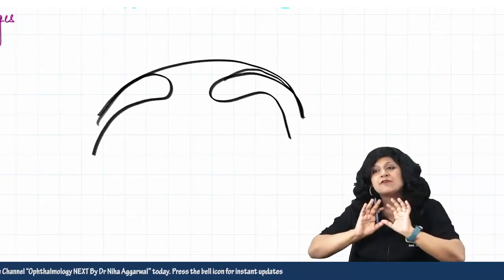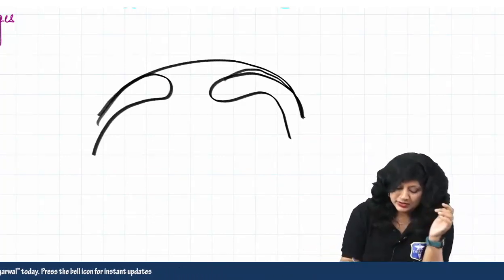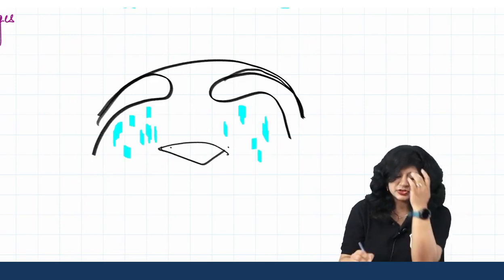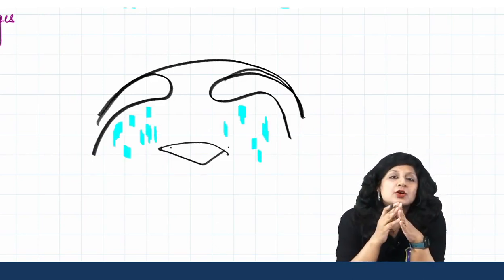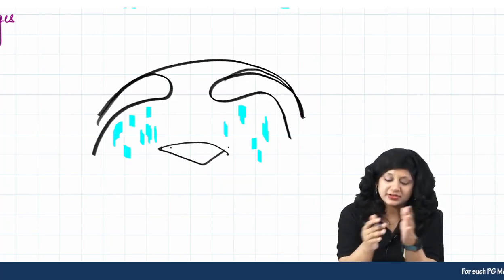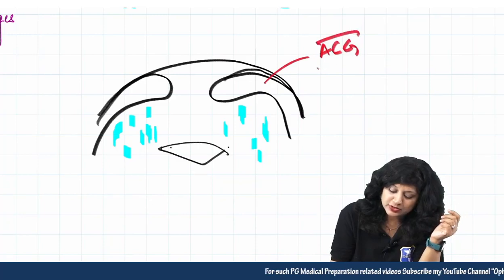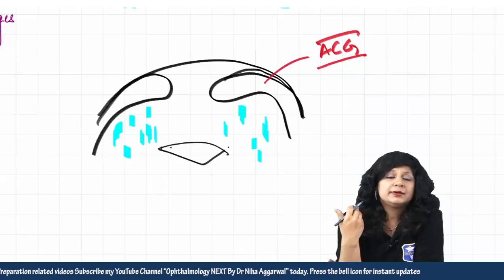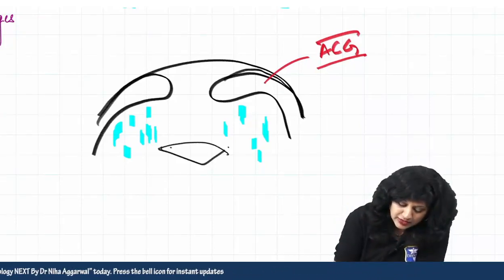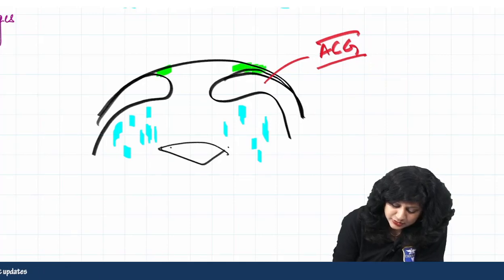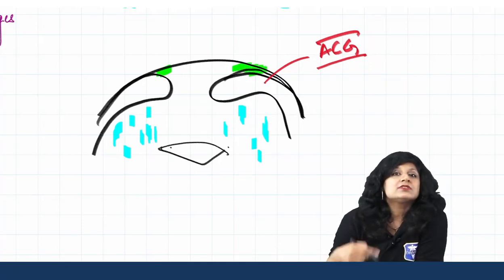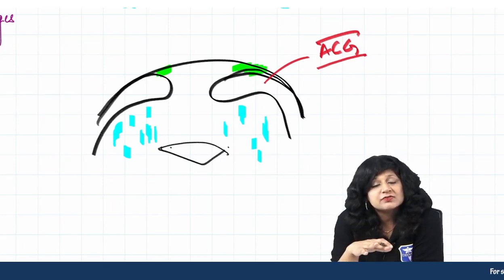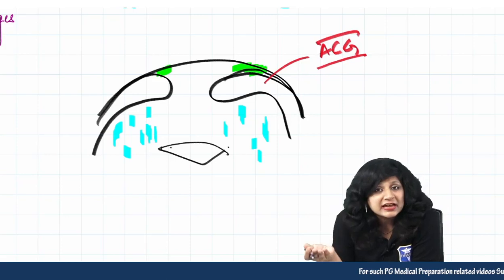This is iris bombé formation — ballooning of the iris over the lens due to excessive aqueous collection behind it. Due to this forward bulging, there is sudden closure of the angle of the anterior chamber, causing an attack of acute congestive glaucoma. If these attacks occur repeatedly and are not treated, anterior synechia — anterior to the iris — will form, leading to chronic synechial angle closure glaucoma.